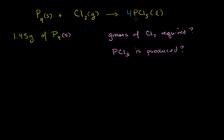Now I have four phosphorus atoms on both sides of the equation. Let's balance the chlorine now. On the left-hand side I only have two chlorine atoms — this one molecule of chlorine has two atoms in it. Each molecule of phosphorus trichloride has three chlorines, and I have four molecules of it, so four times three gives 12 chlorines on the right-hand side. I need 12 on the left, so let me multiply that by six. Six times two is 12, four times three is 12 — now our equation is balanced: four phosphoruses on each side and 12 chlorines.